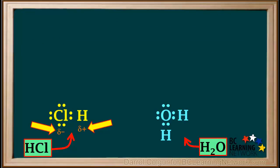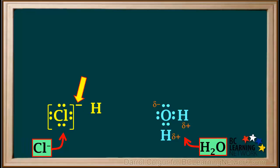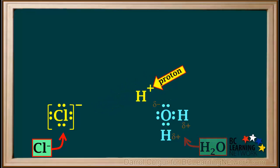HCl is a polar molecule. There is a partial negative charge on the chlorine atom and a partial positive charge on the hydrogen atom, shown by the delta minus and delta plus. The water molecule is also polar. The negative charge on the oxygen pulls the partially positive hydrogen atom away from the chlorine. The hydrogen leaves its shared electron with the chlorine atom, which gains an electron and becomes a Cl- ion. The hydrogen atom forms an H+ ion, which is also called a proton. The proton moves to the water molecule and attaches to one of the lone pairs.